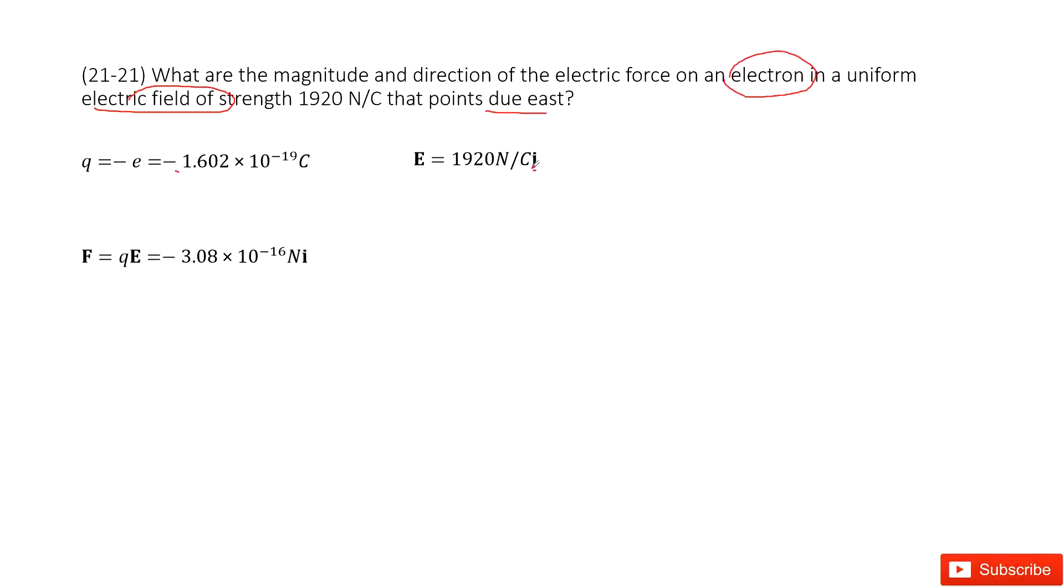Now you can see we need to find the electric force. This is our vector, right? So we use charge times the electric field. We get the answer here. And this is in the direction negative I. So negative x direction, that is due west. Agree? Thank you.